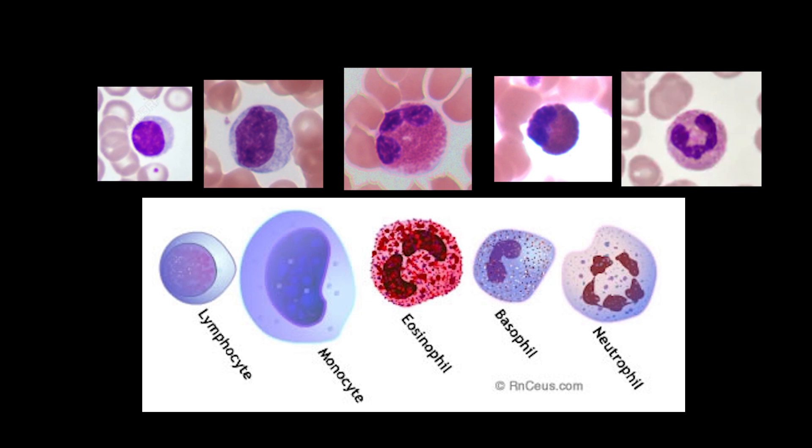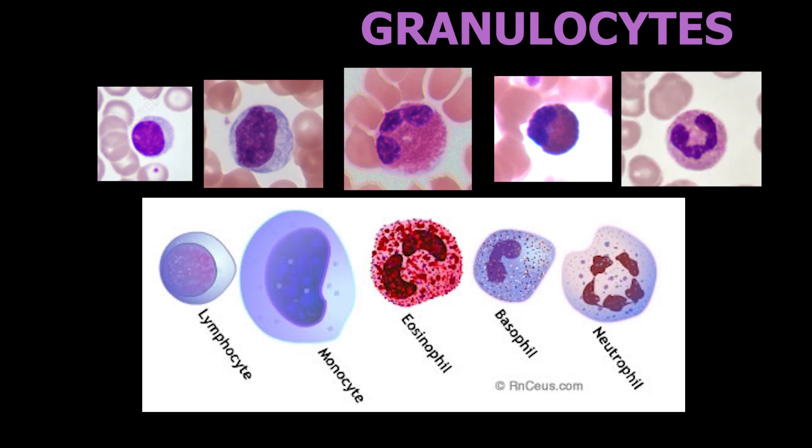There's no substitute for practice — you really just have to practice looking at cells and identifying them. The lymphocyte and monocyte have clear cytoplasm, whereas eosinophils, basophils, and neutrophils have cytoplasm that looks to have granules in them. In fact, eosinophils, basophils, and neutrophils are called granulocytes because they have these granules.